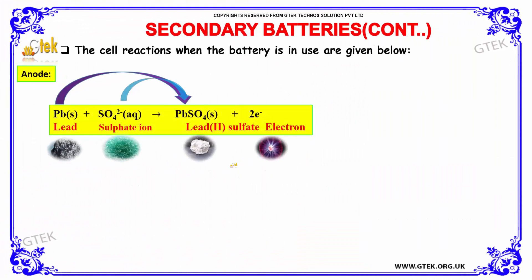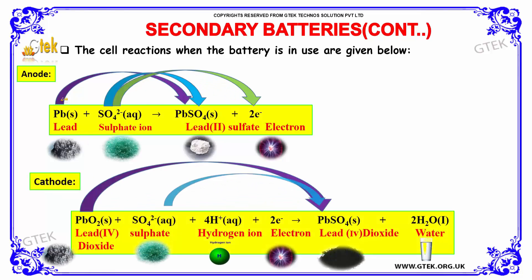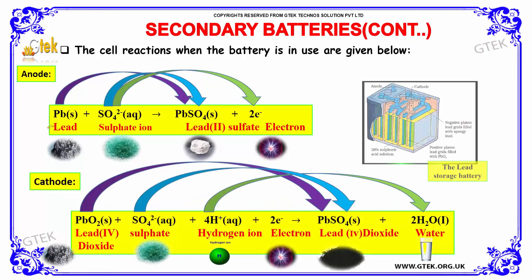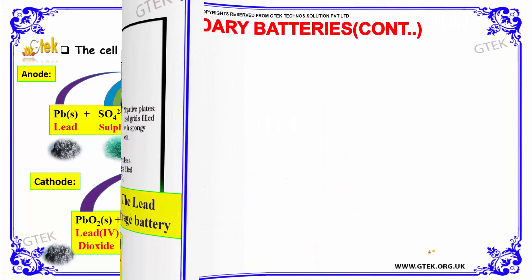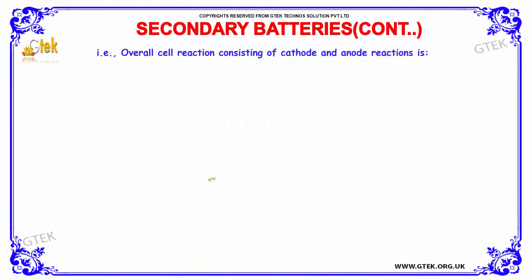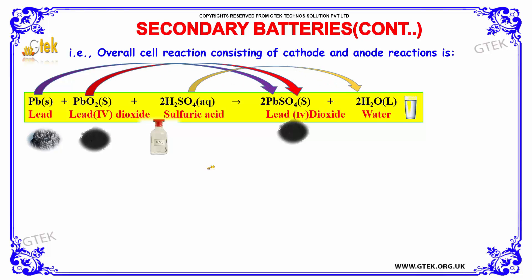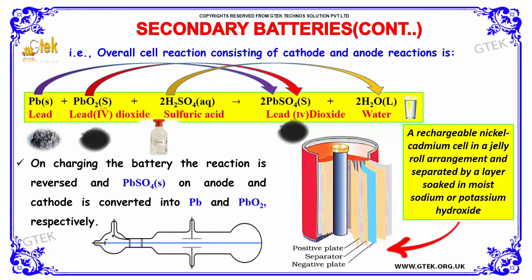The cell reactions when the battery is in use are given below. At the anode, lead on reacting with sulfate ion gives lead sulfate (PbSO4) plus electrons. At the cathode, lead dioxide on reaction with sulfate and hydrogen ions with electrons gives lead sulfate and water. Therefore, the overall reaction consisting of cathode and anode will be as follows.